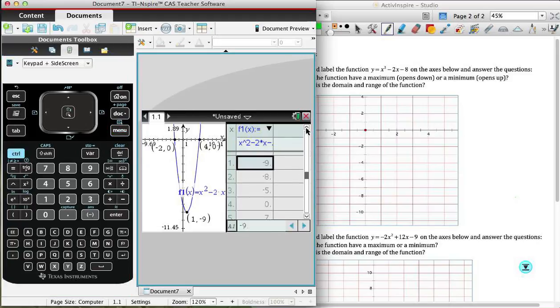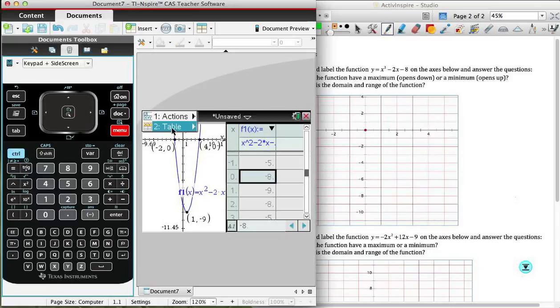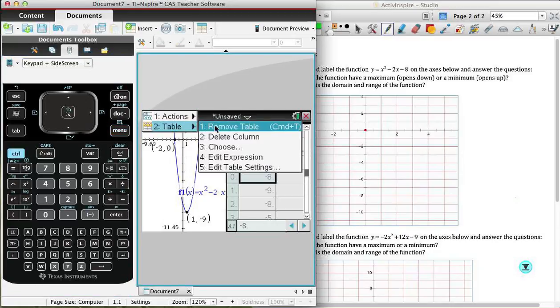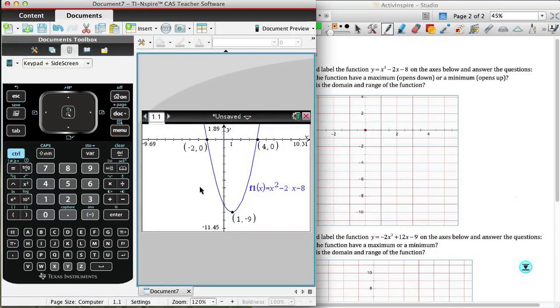And then all I'm going to do is just scroll up. And what we have here are the x values. When x is 0, y is minus 8. That's the value of the function. And that is going to be our y-intercept. And so we could use the table for that. Or we could alternatively go ahead and use the trace function as well.